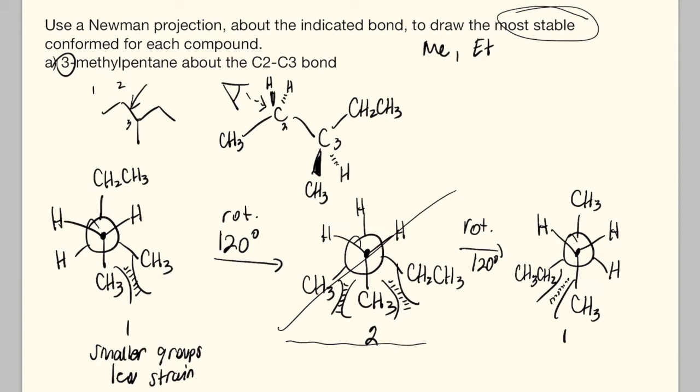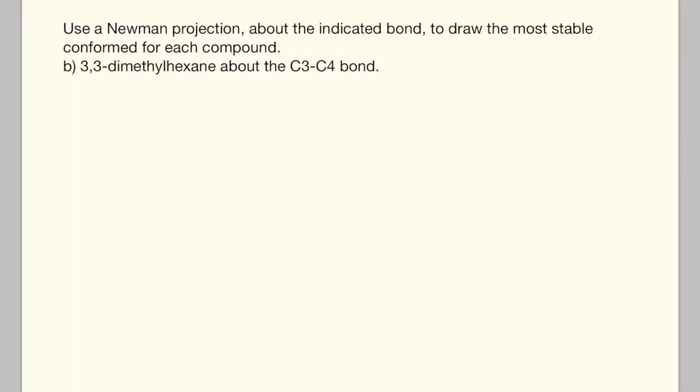These are smaller groups, which means less strain because smaller groups have smaller electron clouds and bump into each other less severely. An ethyl group is larger than a methyl group, so that's more strain. The methyl-methyl gauche interaction is not as bad, so this is going to be the final answer for this question.